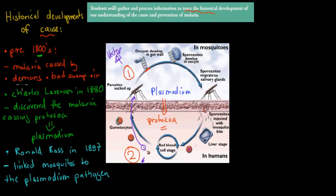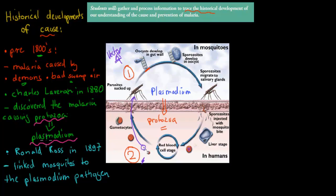Some people had the idea that demons gave people malaria. Others were convinced it was the swampy air, since malaria was really common close to swamps. This was before Louis Pasteur's ideas — before people realized that something microscopic could cause disease. Then came Louis Pasteur, and his ideas revolutionized science. Because of his ideas, someone called Charles Laveran, in 1880, thought there might be a germ causing this disease. He looked at people with malaria and found that everyone with malaria had this protozoa — what he called plasmodium.